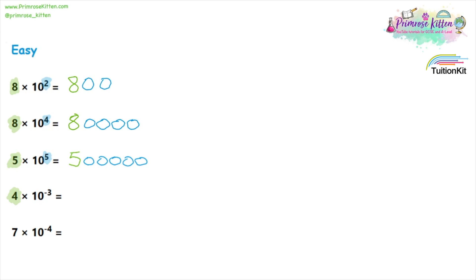Slightly trickier ones now, because we have 4 times 10 to the minus 3. This just means it's a number smaller than zero. So we're going to start over on the right hand side with our 4. Instead of having our zeros after this, we need to have our zeros before our number — three zeros before it — and we need to put a decimal place in after that first zero. So it becomes 0.004. For 7 times 10 to the minus 4, again starting on the right hand side with our 7. Because it's minus 4, in front of that 7 we need four zeros, and after that first zero we put a decimal point. So 7 times 10 to the minus 4 becomes 0.0007.